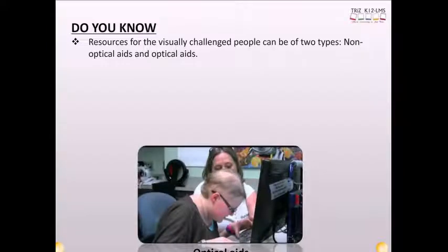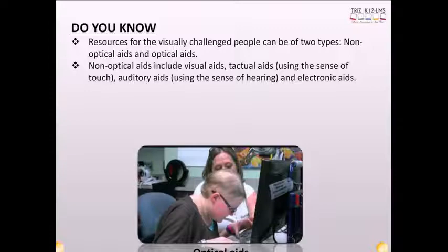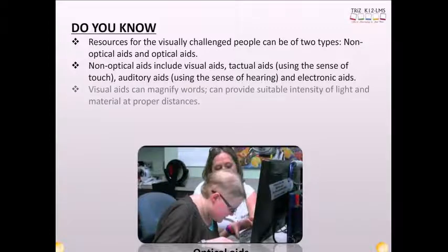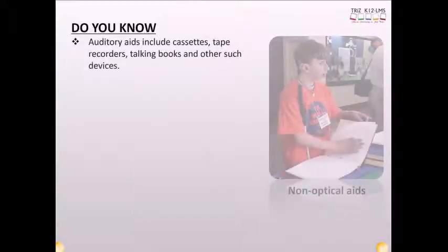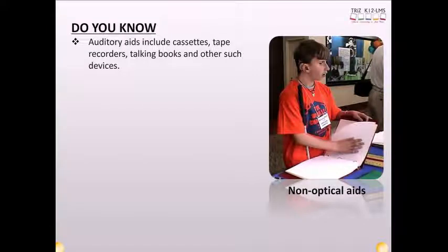Resources for the visually challenged people can be of two types: non-optical aids and optical aids. Non-optical aids include visual aids, tactual aids using the sense of touch, auditory aids using the sense of hearing, and electronic aids. Visual aids can magnify words, provide suitable intensity of light and material at proper distances. Tactual aids, including braille writer slate and stylus, help the visually challenged persons in taking notes, reading, and writing. Auditory aids include cassettes, tape recorders, talking books, and other such devices. Electronic aids, such as talking calculators, are also available for performing many computational tasks.